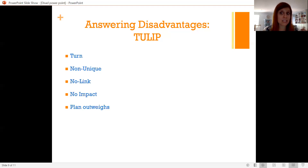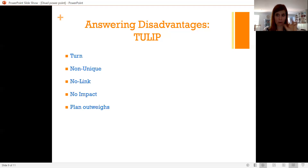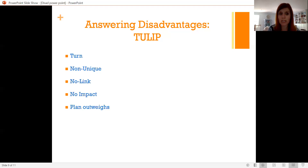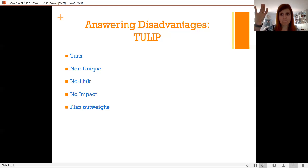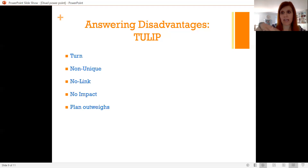If you are ready to impact turn, it's a very valuable tool in the arsenal — impact turn and it's awesome. But it's often a little bit easier and more flexible to link turn a dis-ad. That's the Turn component. The other components — Non-unique, No-Link, and No-Impact — are just takeouts to the different components of the disadvantage itself.